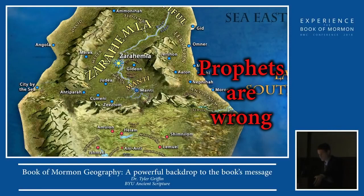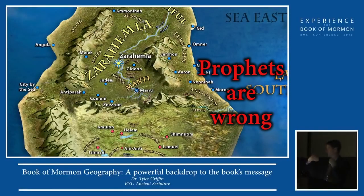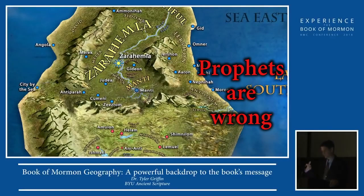What if you consider for a moment — just to open up the possibility — that the land of Zarahemla, where the Nephites lived, could represent us, our existence on this earth, and our efforts to try to live the gospel? And the Lamanites being that opposition that keeps coming to try to destroy us, try to enslave us, try to get us to fall to their subjection, take over our agency — that element of opposition in our life.